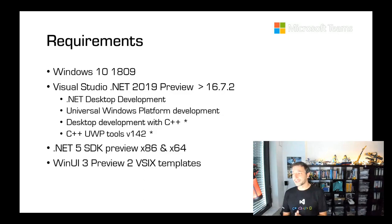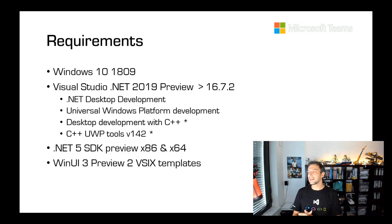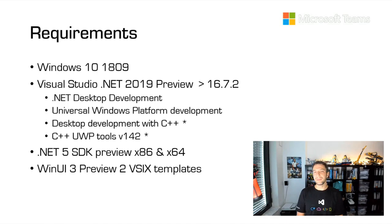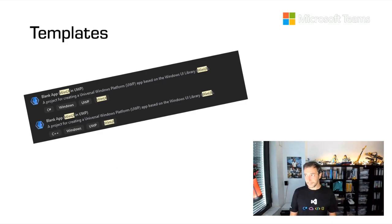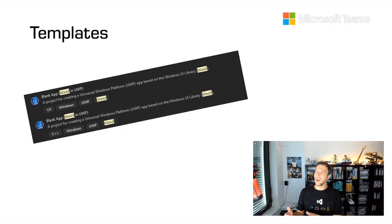Last but not least, you'll need the project templates. You can get those by installing the WinUI 3 Preview 2 VSIX templates. If you have the Preview 1 templates installed, uninstall those first — otherwise it won't work. Speaking of templates, one is the blank app for UWP with WinUI, available for C# and C++, for creating UWP apps based on the new WinUI 3 library. You can also create desktop apps with the blank desktop app template, also available for C++ and C#.